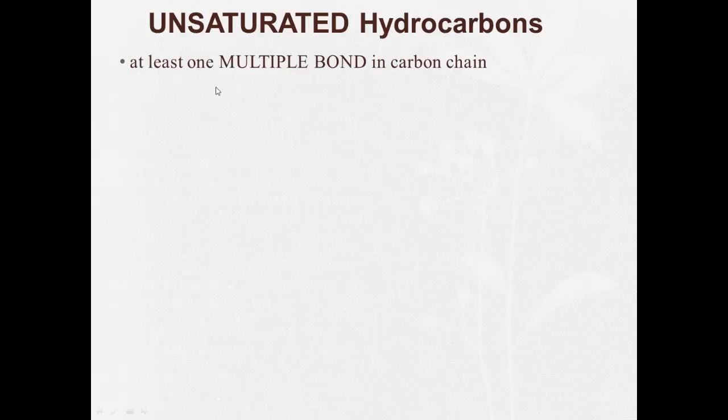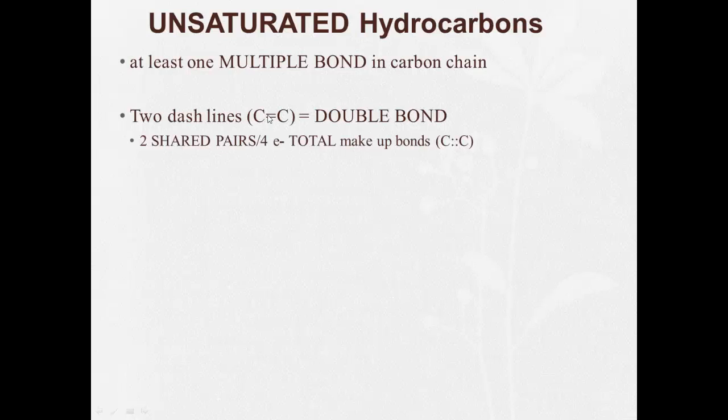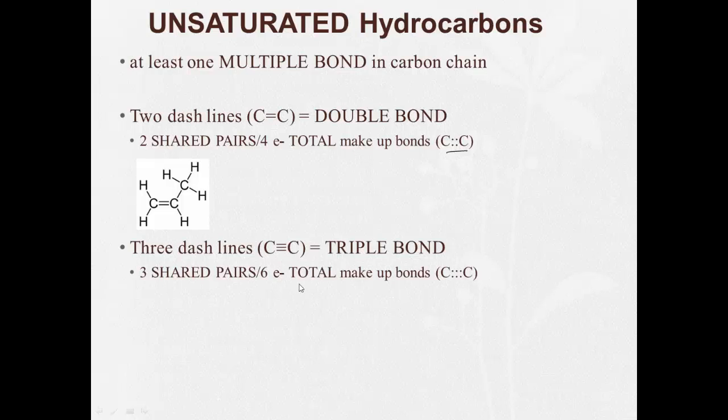Unsaturated hydrocarbons are going to have at least one multiple bond in the carbon chain. Remember, two dashed lines is going to represent a double bond, and that means there's two shared pairs of four electron totals making up that double bond. So here's an example of an unsaturated hydrocarbon with one double bond. Now, three dashed lines represents a triple bond, right? So you have three shared pairs, six total electrons making up these triple bonds. And here's an example of an unsaturated hydrocarbon with one triple bond.